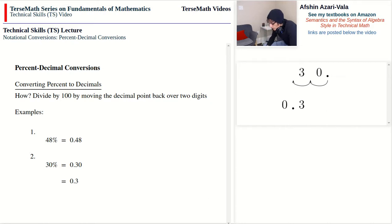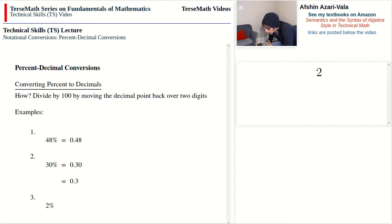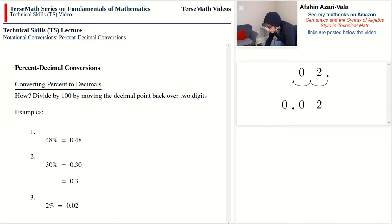So 30% can be written as 0.30, which is 30 hundredths, or as 0.3, which is 3 tenths. Next, problem three: 2%. In this case we don't have enough digits to move the decimal point, so we add zeros. Moving the decimal point back over two digits and adding a zero gives us 0.02. Two percent, which is two out of a hundred, equals two hundredths — that makes perfect sense.